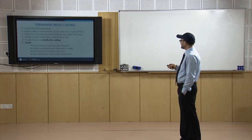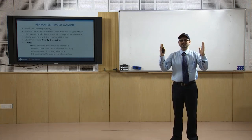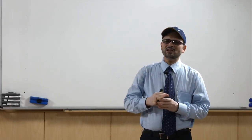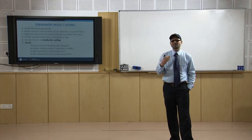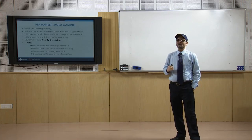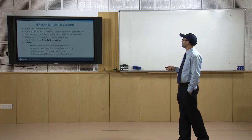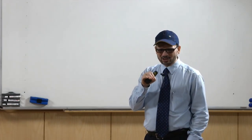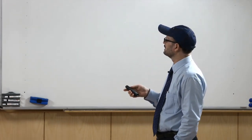The term gravity die casting refers to when the metallic mold or permanent mold — known as a die — is used and the metal is fed by gravity. If you have two metallic dies with a cavity and you feed the metal through gravity, it is known as gravity die casting. When we talk about permanent mold casting, by default we think of gravity die casting. The metal can also be fed under pressure, in which case it is called pressure die casting.